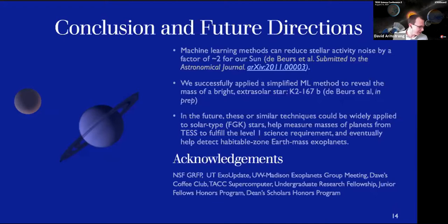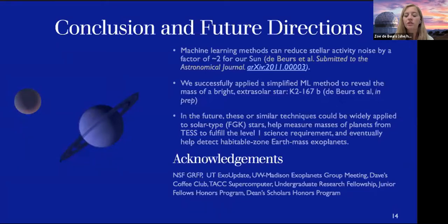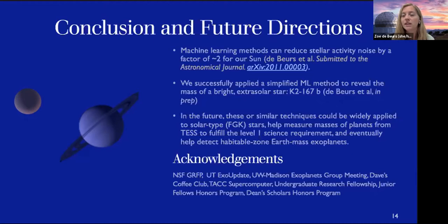Adina Feinstein asked: how well does your method work for RVs from instruments other than HARPS-N, and could it be combined across instruments? We have done some work with EXPRES data and see significant improvement in RV scatter for some stars but not others — we're investigating whether that's instrument-related or star-intrinsic. We haven't looked at combining RV datasets, but that may be an interesting future direction.